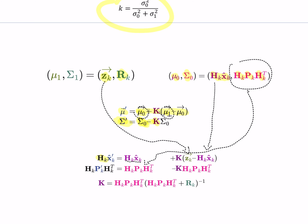For the new uncertainty: new sigma equals sigma zero minus k times sigma zero, which gives hk times Pk times hk transpose, minus k times sigma zero. And k is sigma zero divided by (sigma zero plus sigma one) — but since we are in matrix notation, instead of dividing we take the inverse. So k equals hk times Pk times hk transpose, times (sigma zero plus sigma one) to the minus one. These are the new multi-dimensional Kalman equations, exactly like the one-dimensional case.